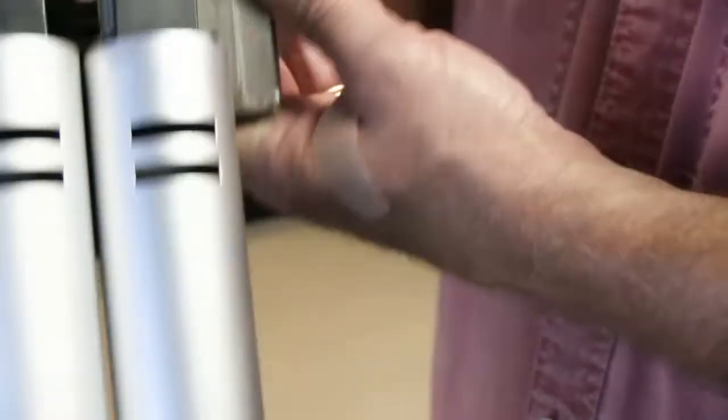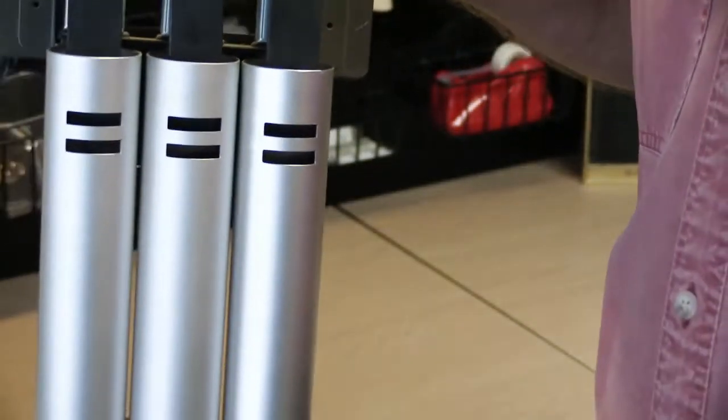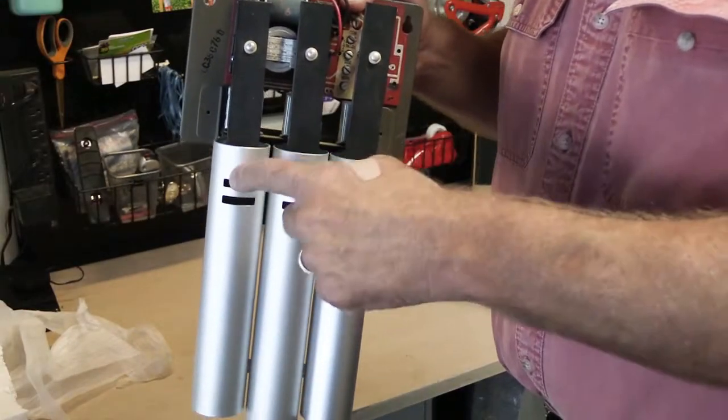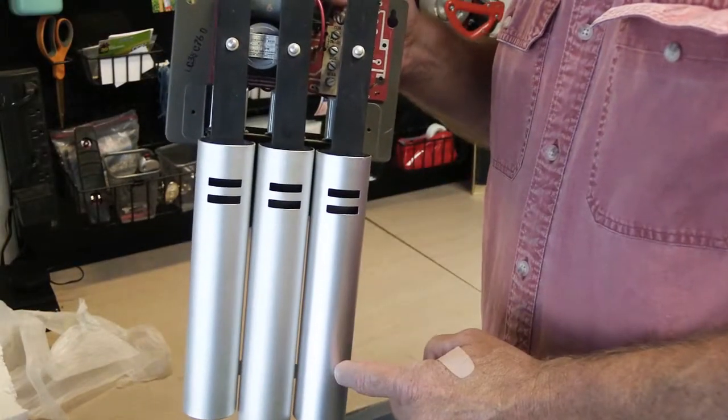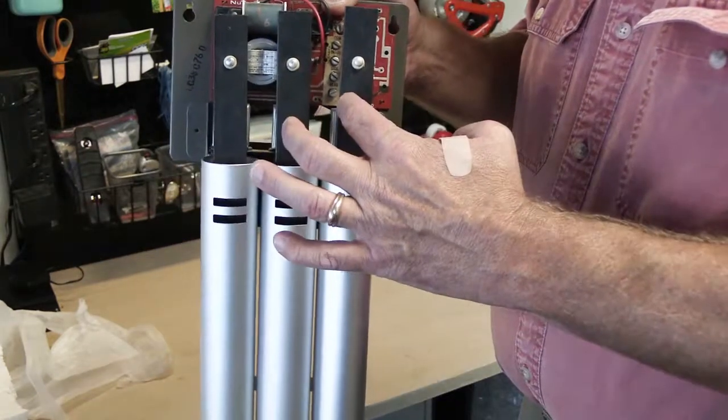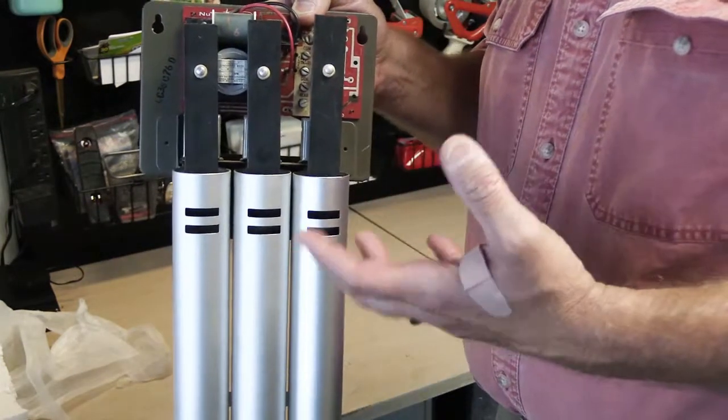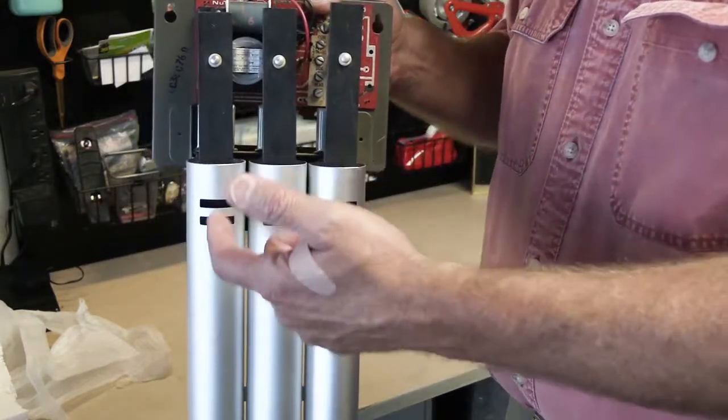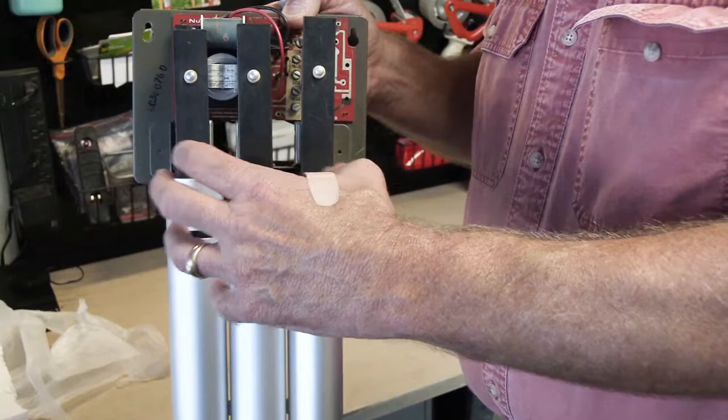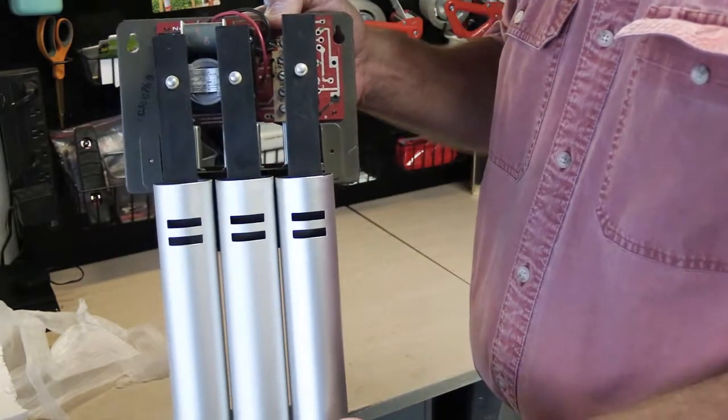And the important part of this, one of the important parts of this type of chime design, are the resonator tubes. Because if you take these away and you just have the tone bars, it has sort of a dull thunking kind of sound. It's the resonators with the slots that amplify the sounds of the tone bars and make you be able to hear it throughout the house.